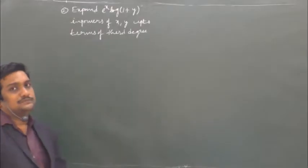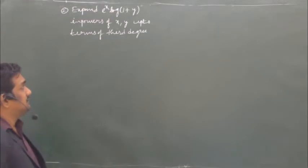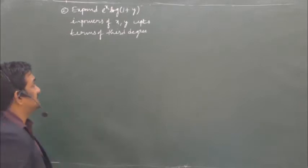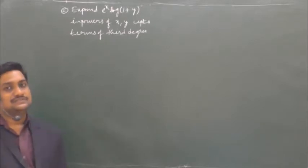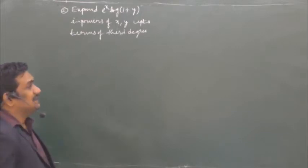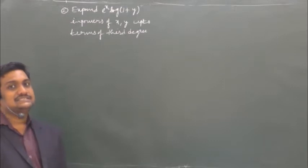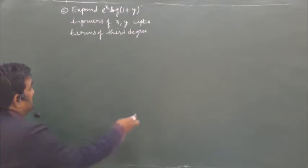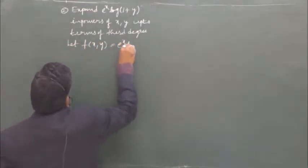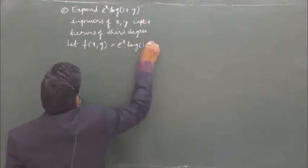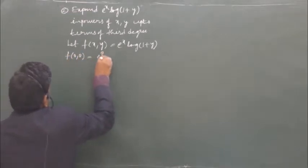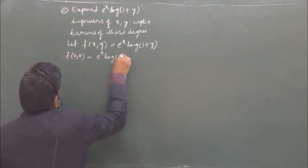Now let us take another problem. He is asking to expand e^x into log of 1 plus y in powers of x and y, which is the same as McLaurin series expansion. In McLaurin series, the first term is f(0,0). Let us assume the given function as f(x,y) = e^x · log(1+y). So the first term is f(0,0) = e^0 · log(1+0) = 0.